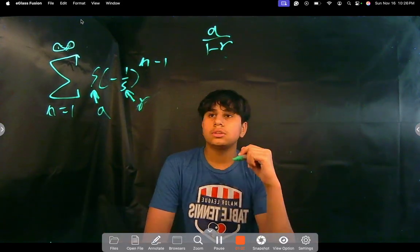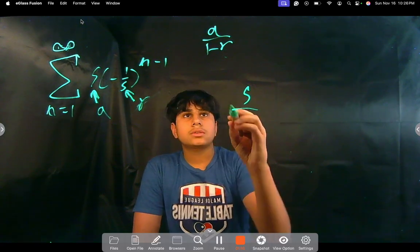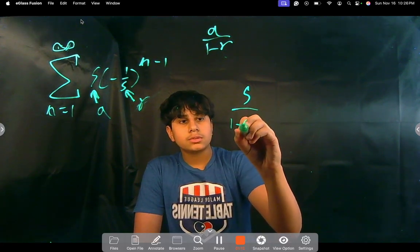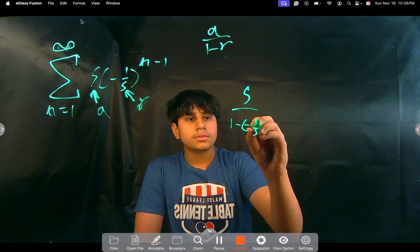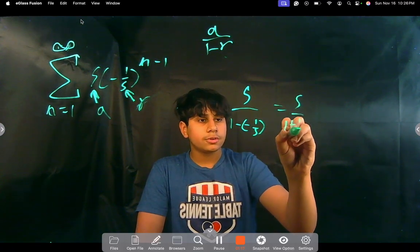So yeah, now we're just going to use this formula, so it's 5 over 1 minus negative 1 over 5, right? 1 minus negative 1 fifth, which is equal to 5 over 1 plus 1 fifth,